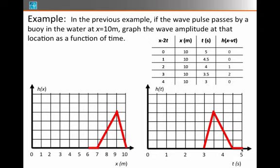Overall, what we're trying to cement here is the idea that the function h only depends on the combined variable x minus vt — it doesn't matter what x and t are individually, as long as they appear in this particular combination. We can imagine ourselves at a fixed location x, or we can take a snapshot at a fixed time t. The left graph represents a fixed time with position on the horizontal axis; the right graph represents a fixed position with time on the horizontal axis.